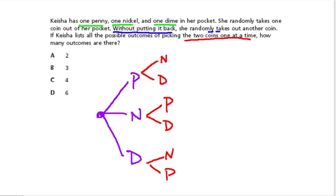This means that on the first choice, there were three possibilities: penny, nickel, or dime. On the second choice, there are two options for each category. So altogether, there are six options, six total possibilities.